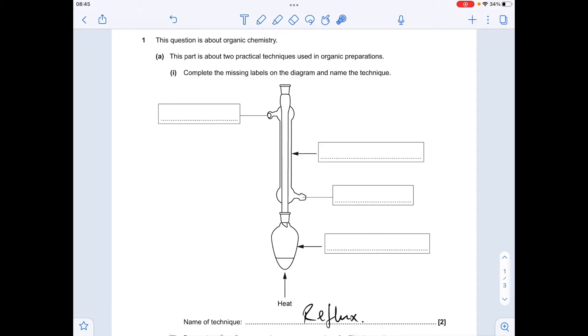Going through the labels now: this piece of apparatus is a condenser. At the bottom here we've got a flask, actually a pear-shaped flask. The other thing to mention is the direction of the water flowing around the outside of the condenser - it goes in at the bottom and comes out at the top.